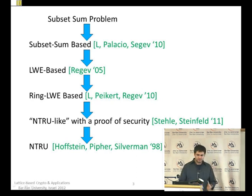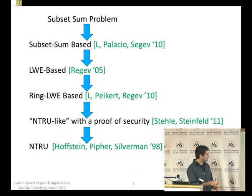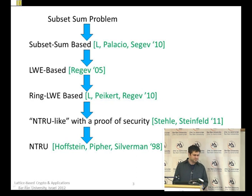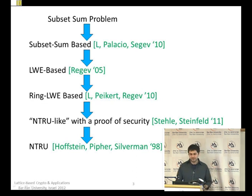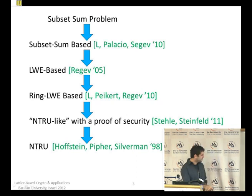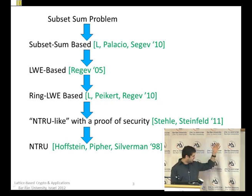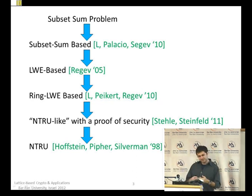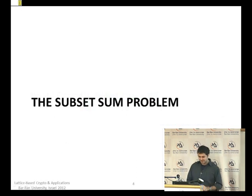A small modification of LWE — because you see something inefficient — leads you to ring LWE. And then noticing there's something to improve, you get something NTRU-like with a proof of security. And then changing something there gives you NTRU. When you see this timeline, you'll see this is really the natural way to have invented lattice-based cryptography.